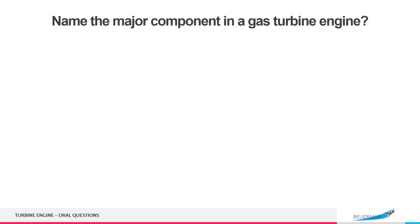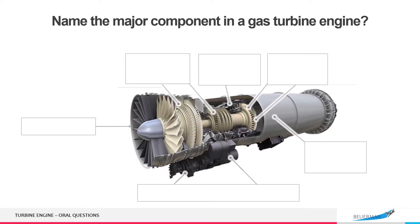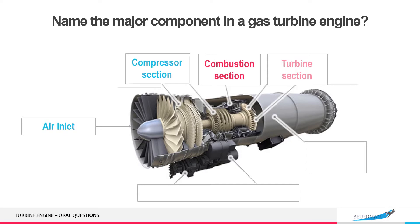Name the major components in a gas turbine engine. Air inlet, compressor section, combustion section, turbine section, exhaust section, gearbox and accessory section.